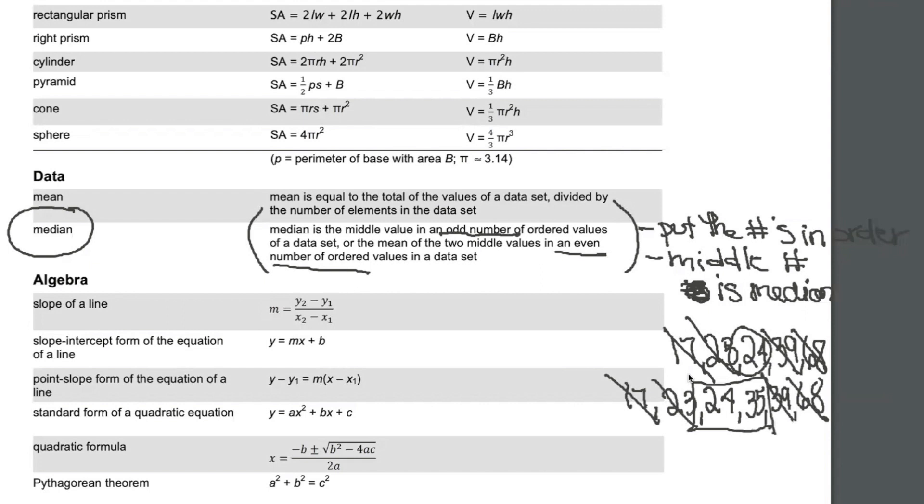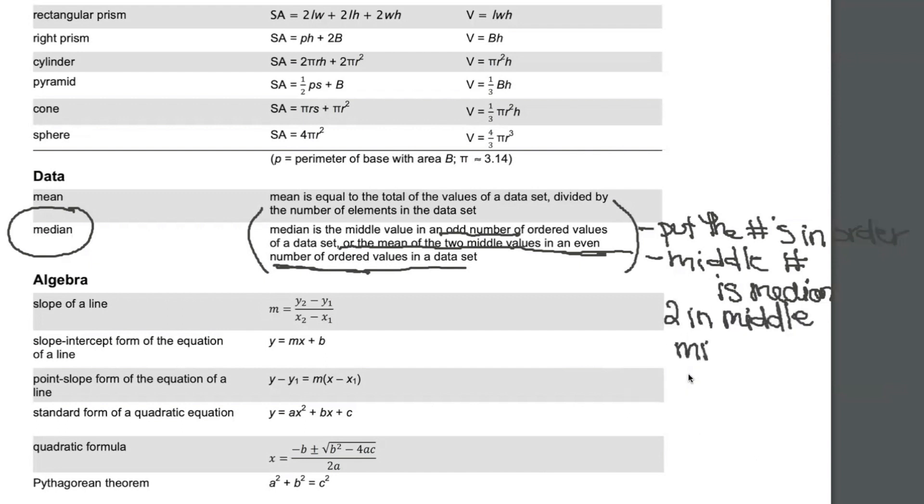So that's what they mean, but they'll tell you what to do when there's two in the middle. So look at what it says. It says, or it's the mean of the two middle values in an even number of ordered values in a data set. Basically what they're saying is if there's two in the middle, take the mean of those two numbers. I often call that a mini mean. You're going to take the two middle numbers, total them by adding them together and take the mean of just those two, divide them by two. It's a little mini mean problem when you're looking for the median, when there's two numbers in the middle.